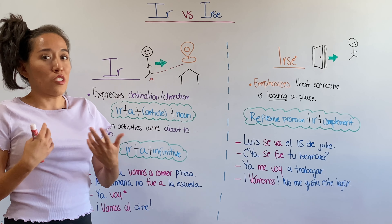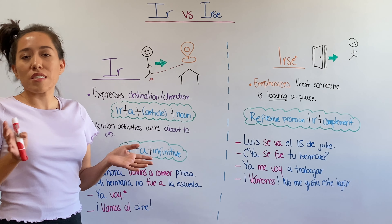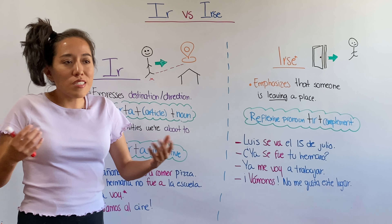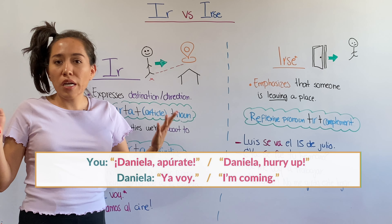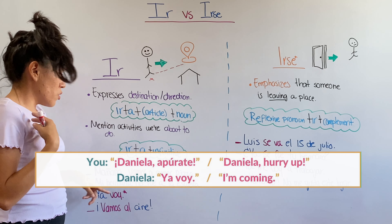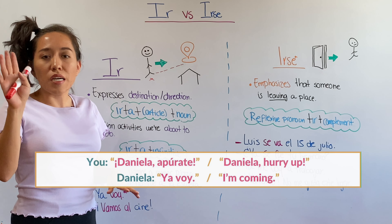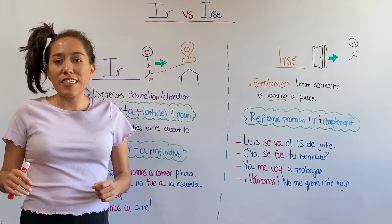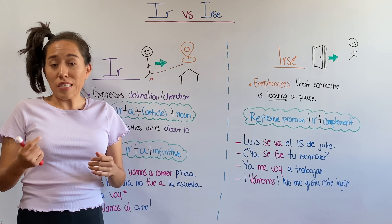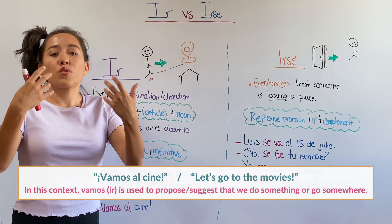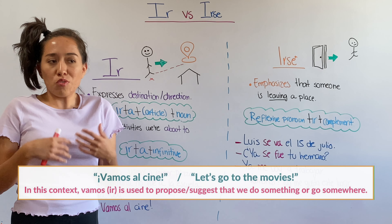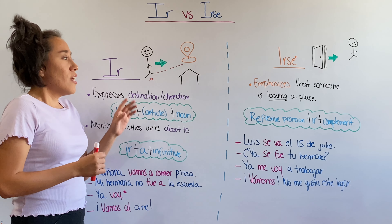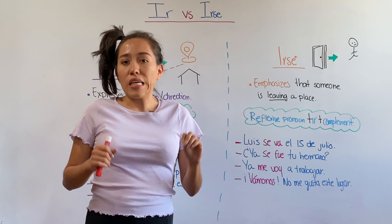For example, we're going to eat pizza and you're waiting for me at the door. You're going to say, 'Daniela, apúrate — hurry up.' My response is going to be, 'Ay, ya voy. I'm coming. Relax.' Example number four: 'Vamos al cine — let's go to the movies.' In this context, we're going to use it to propose, to make suggestions to people to do something or go somewhere. 'Vamos al cine. Vamos a comer pizza.'